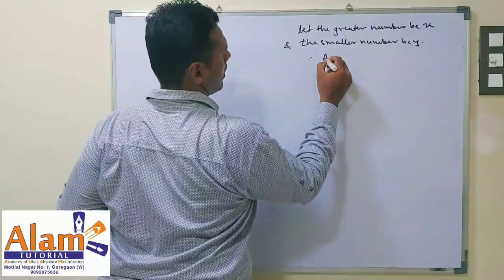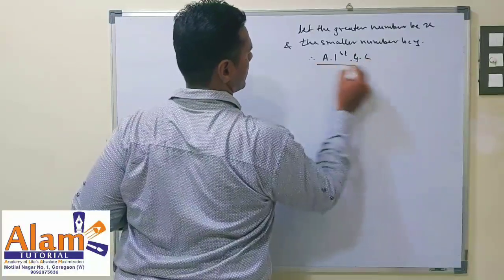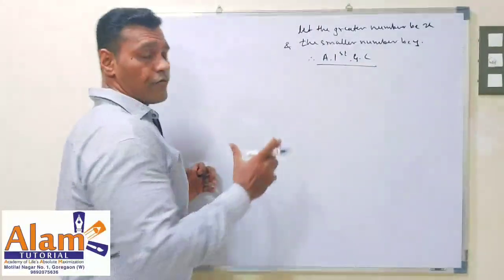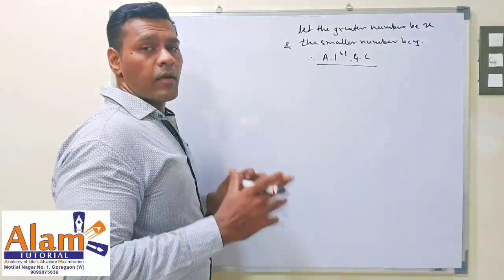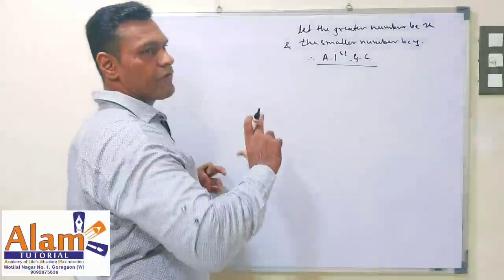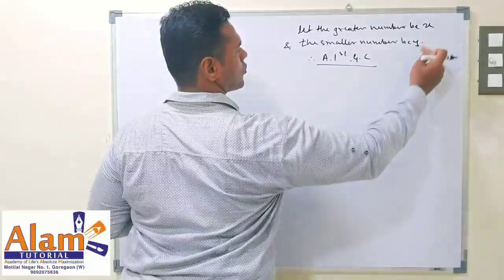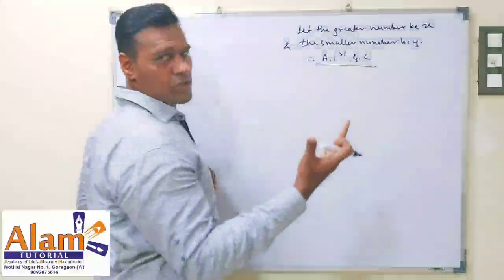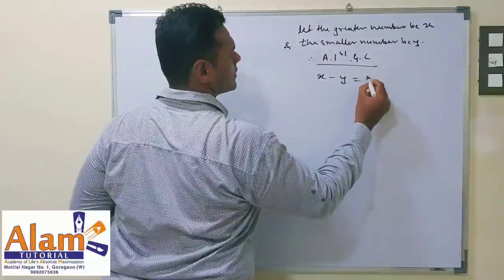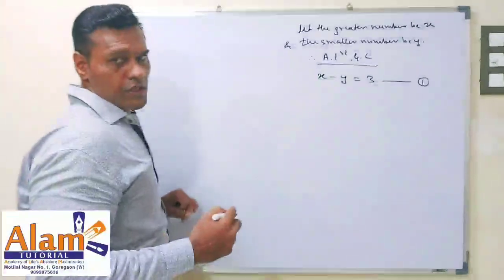Therefore, according to the first given condition — the numbers differ by 3. Differ means difference. Since x is the bigger number and y is the smaller number, the difference is always subtraction. So according to the first given condition, x minus y is equal to 3. This will be your first equation.